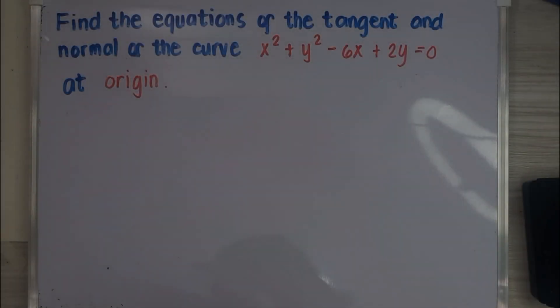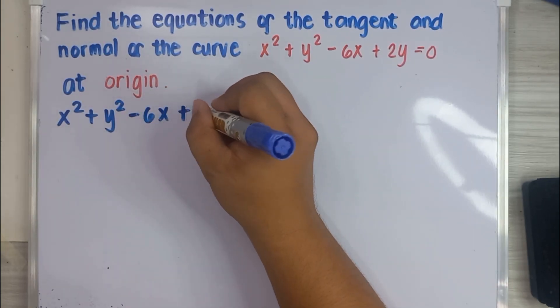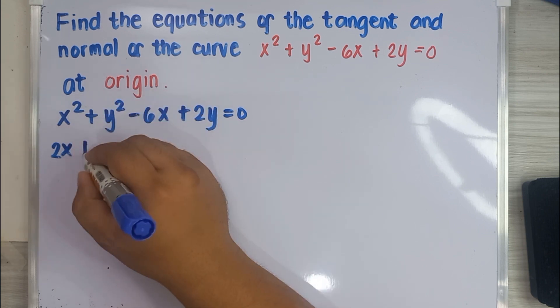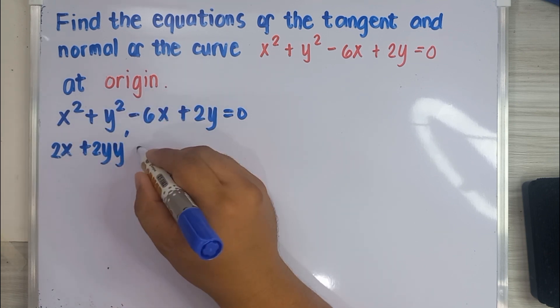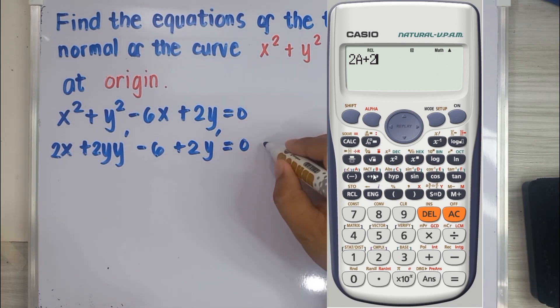For our next problem, we will do implicit differentiation to solve for the slope, and we can use our calculator by using the solve function. 2x plus 2yy' minus 6 plus 2y' equals 0. Input this with x as a, y as b, and y' as x in your calculator.